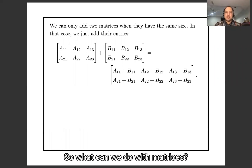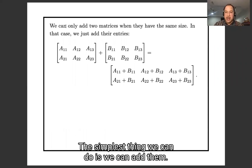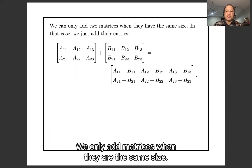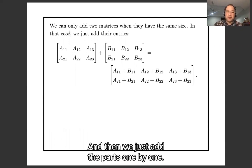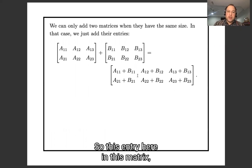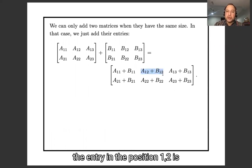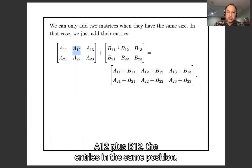So what can we do with matrices? The simplest thing we can do is we can add them. We only add matrices when they are the same size, and then we just add the parts one by one. So this entry here in this matrix, the entry in position one two is A one two plus B one two, the entries in the same position.